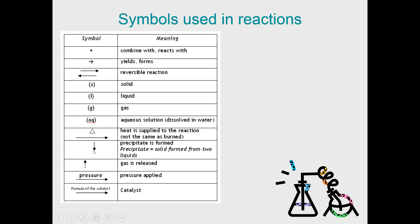A downward arrow next to a chemical formula indicates a precipitate is being formed — a solid produced from two liquids. You can use the down arrow or simply write (s). An upward arrow next to a formula indicates a gas is being released; alternatively use (g). If pressure is applied to a reaction, write the word 'pressure' above the arrow. If a catalyst is used — a catalyst speeds up the reaction without being consumed — write the catalyst's chemical formula above the arrow.